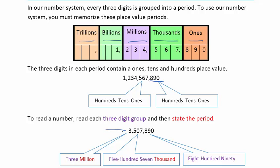So let's take a look — I'll read this number for you. We start in the millions period here, and since there's only a three, I would just say three million. Now we go to the next period, which is the thousands period, and here we have 507,000 and then 890. You read the group of three digits in the period and then just state the period afterwards. Notice when I did the ones period, I didn't have to say the period — we say every period except for the ones period. It's understood when we say 890 that that's the ones period.